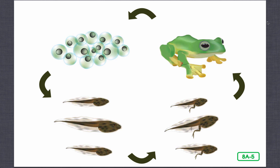A butterfly's life cycle is somewhat different because it goes through a stage called metamorphosis. Metamorphosis is a process in which a living thing changes or transforms from one shape into another — it literally changes its entire appearance. Let's hear more about the extraordinary life cycle of those beautiful creatures called butterflies.